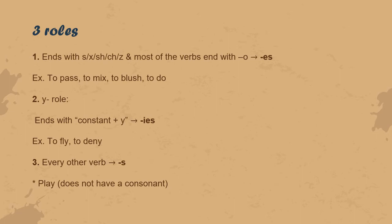The third rule is that basically every other verb that doesn't follow rules one and two just gets an -s. We have to pay attention to the verb 'play', which ends with -y, but before the -y there is an -a, which is not a consonant. Therefore it doesn't follow rule two but rule three, and it just becomes 'plays', like 'he plays' or 'she plays'.